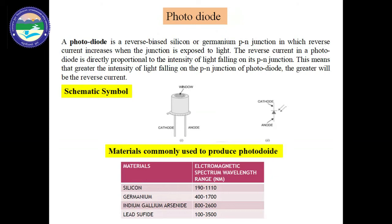A photodiode is a PN junction semiconductor device that consumes light energy to generate electrical current. It is also sometimes referred to as a photodetector, photosensor, or light detector. Photodiodes are specially designed to operate in reverse bias condition, meaning the P side of the photodiode is connected to the negative side of the supply and the N side to the positive side. The symbol of the photodiode is similar to a normal PN junction diode except that it contains an arrow striking the diode, representing light or photons. A photodiode has two terminals: cathode and anode.